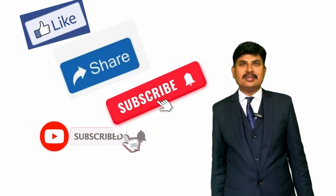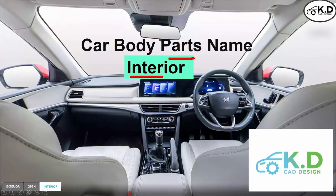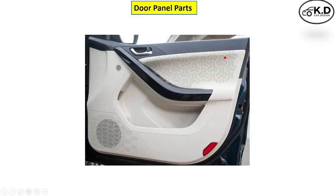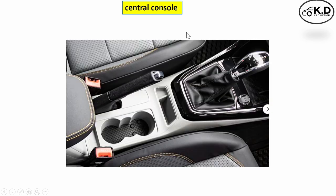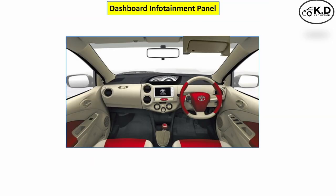Don't forget to like, share, and subscribe to the channel. In this video, we are going to cover the interior parts names and their list. The first one is the dashboard or instrument panel, next is the door panel, third is the central console or floor console, and last is the headliner, roof, or all pillars.